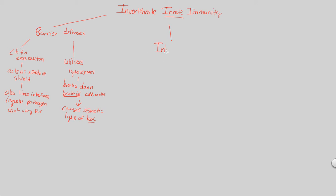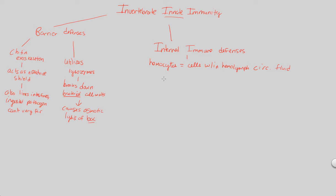When there is internal entry, what are the internal immune defenses of insects? Specifically, insects have cells known as hemocytes within the hemolymph circulatory fluid. Insects don't have a complete circulatory system like vertebrates — they have an open circulatory system containing hemolymph-like material that bathes tissues. Hemocytes within this hemolymph function in immune defense.